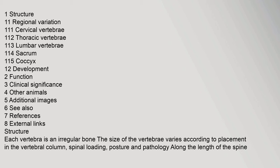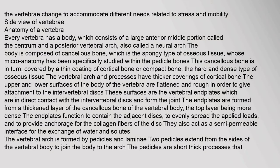Each vertebra is an irregular bone. The size of the vertebrae varies according to placement in the vertebral column, spinal loading, posture, and pathology along the length of the spine. The vertebrae change to accommodate different needs related to stress and mobility.